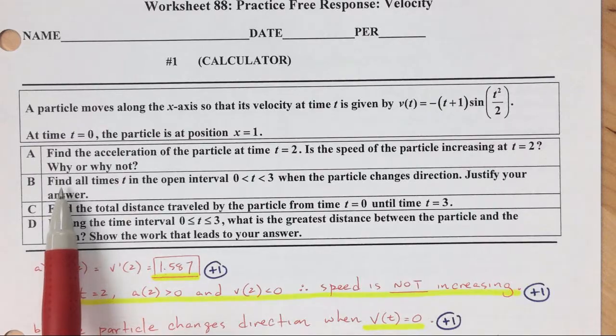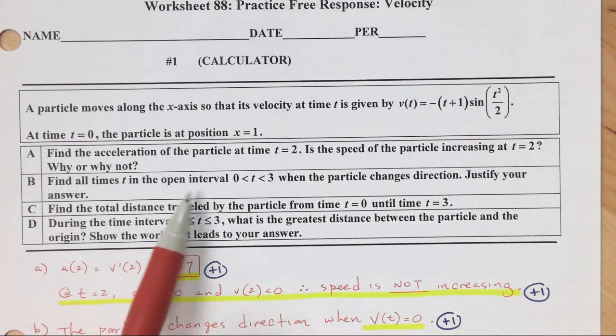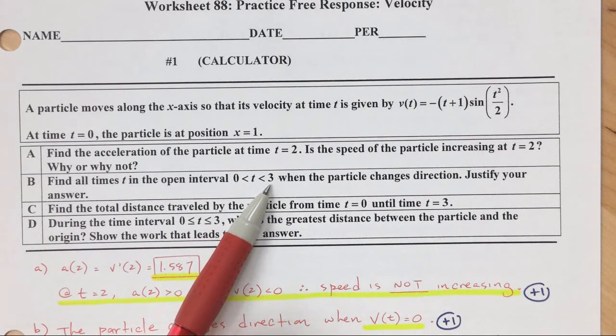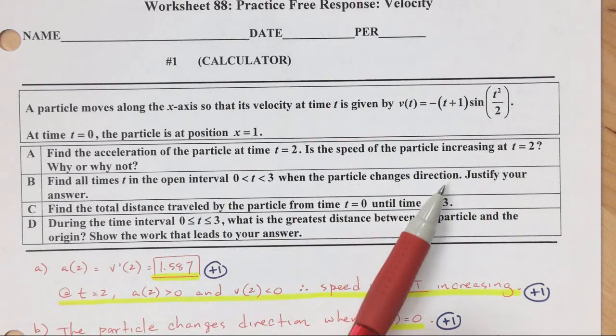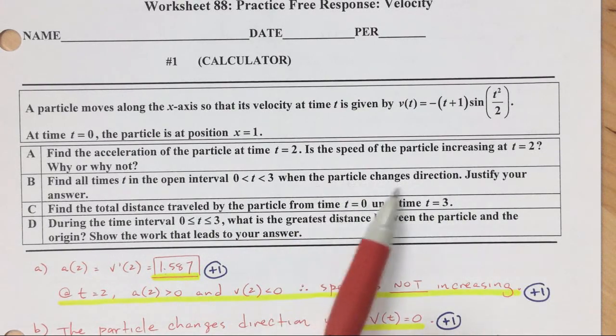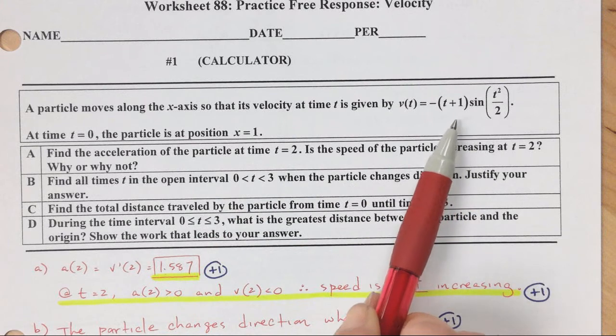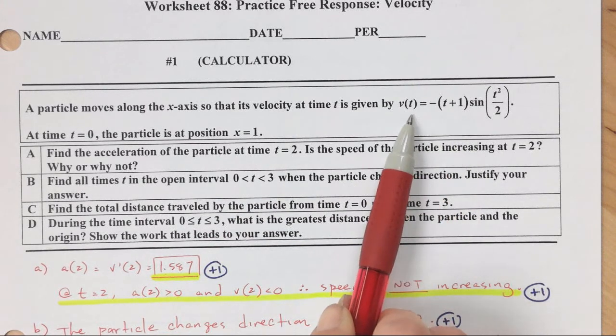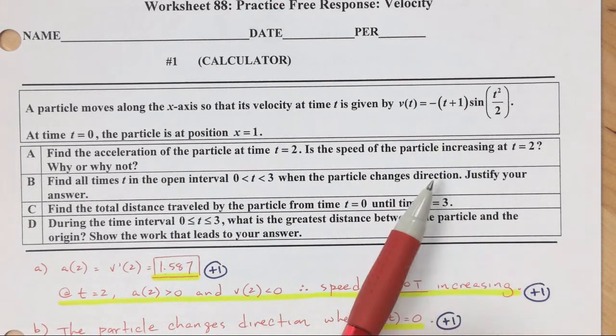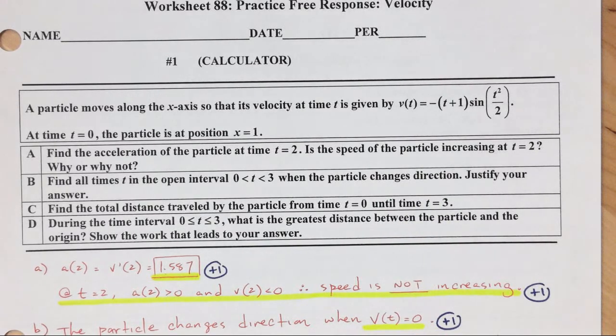Okay, the second part, find all times t in the open interval from 0 to 3 when the particle changes direction. All right, so we want to know when it changes direction. So we want to graph v of t. We want to graph that velocity and see when it equals 0. So that part's really important. The particle changes direction when the velocity equals 0.